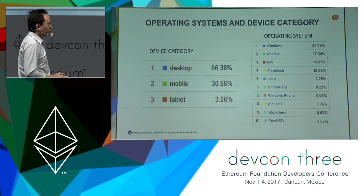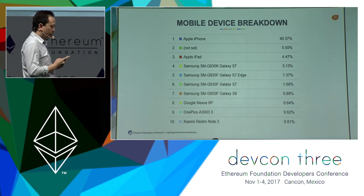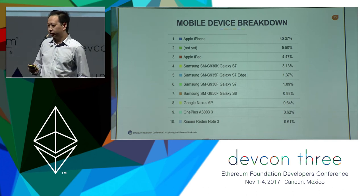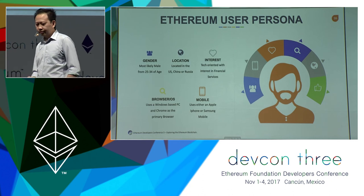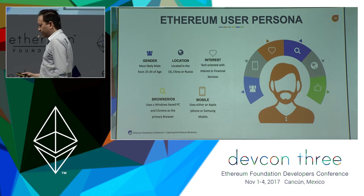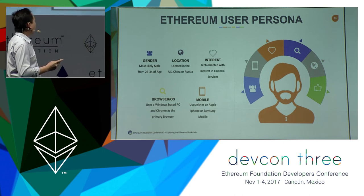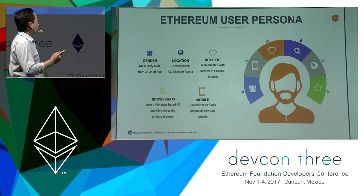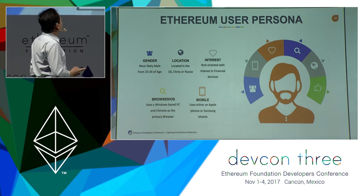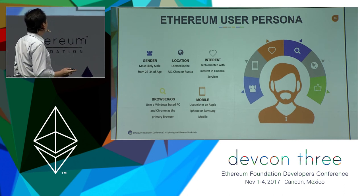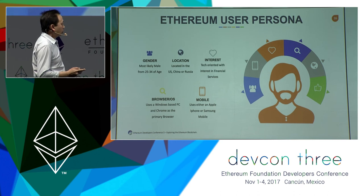Linux users only represent 3% of the user base. Diving into the mobile device breakdown, we see that as a single device type, the Apple iPhone commands the largest market share at 40%, followed by the Apple iPad and Samsung Galaxy phones. So, looking at all this analytics data, our derived Ethereum user will most likely be a male between the ages of 25 to 34, located in the US, China, or Russia, generally with tech-oriented interests and interest in financial services, using a Windows-based PC and Chrome as the primary browser, and in all likelihood owning either an Apple iPhone or a Samsung mobile device.